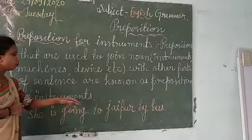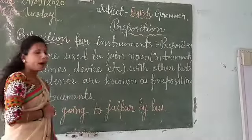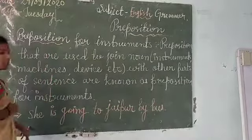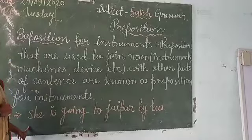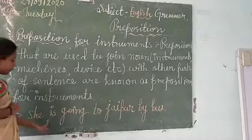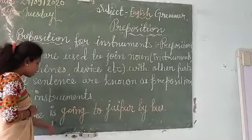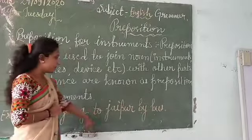For example: 'She is going by bus.' Here, 'by' is the preposition for instrument, joining the noun 'bus' to the rest of the sentence.